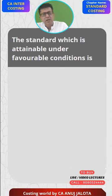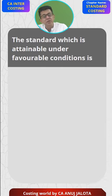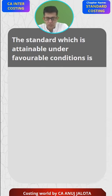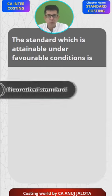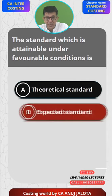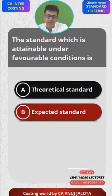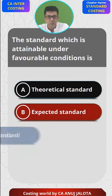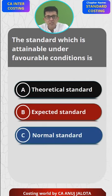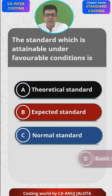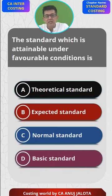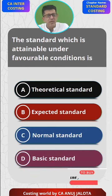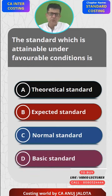So let's do them. The standard which is attainable under favorable conditions is — what are the four options? A is theoretical standard, B is expected standard, C is normal standard, and D is basic standard.